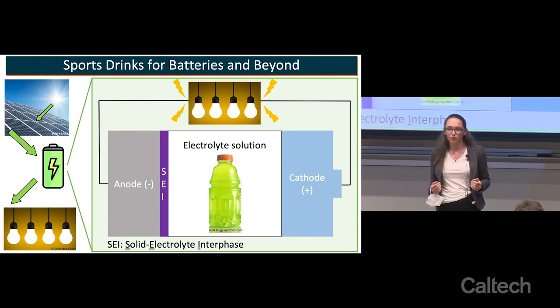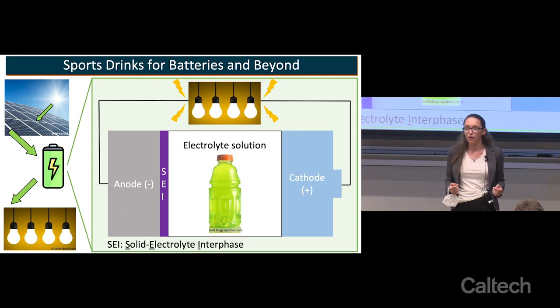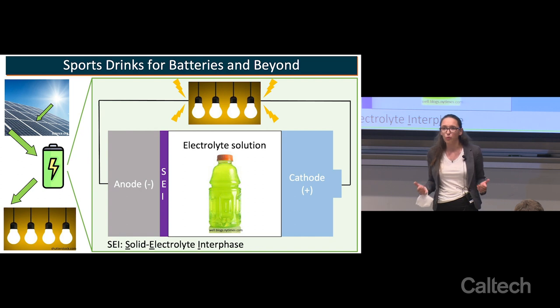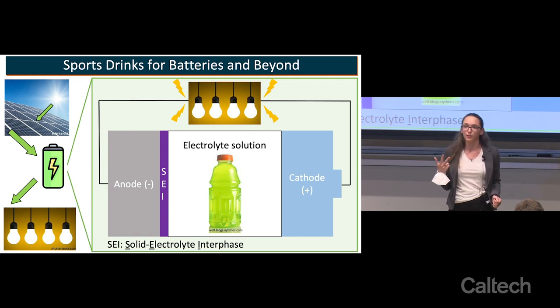But in the new types of batteries we're trying to build, it doesn't always work out that way. Some SEIs block or divert electrolytes from getting where they need to go to keep our battery working, and it's not always clear why those SEIs don't work. My research aims to understand the relationship between the electrolytes we use in a battery, the SEI they form on the anode, and the battery's performance.